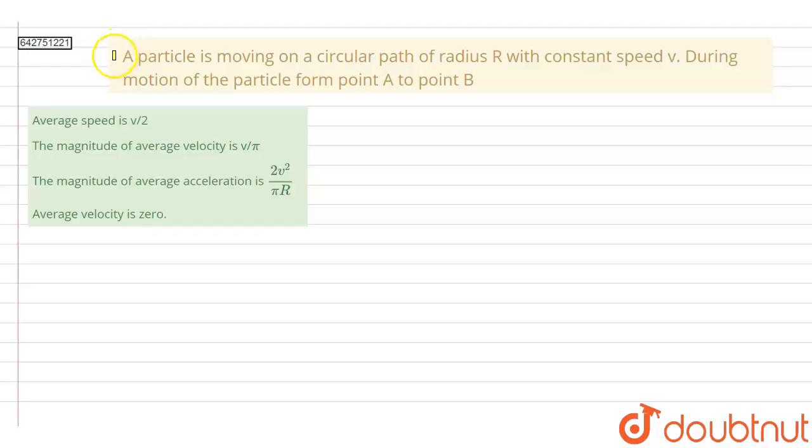Hello everyone. So in this question we have a particle is moving in a circular path of radius R with constant speed V. During the motion of the particle from point A to point B, the four options are: average speed is V by 2, magnitude of average velocity is V by pi, magnitude of average acceleration is 2V squared upon pi R, and average velocity is zero.